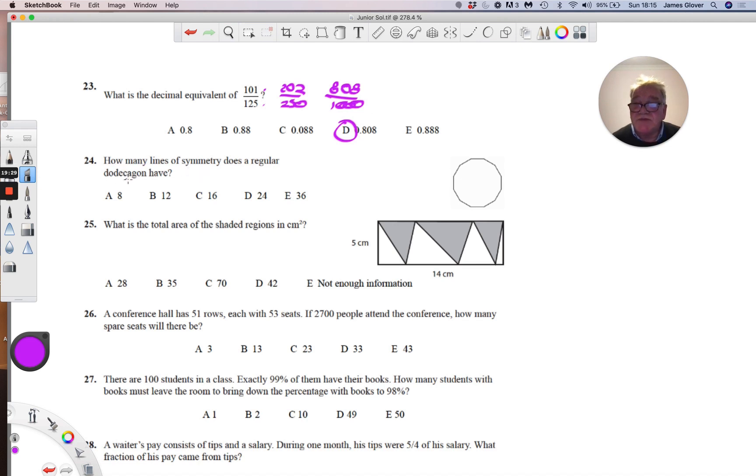How many lines of symmetry does a regular dodecagon have? The diagram is a little bit small here, but the answer, if you count them up, you get twelve. From each corner to the opposite corner and from the midpoint to the opposite midpoint, the total will be twelve.